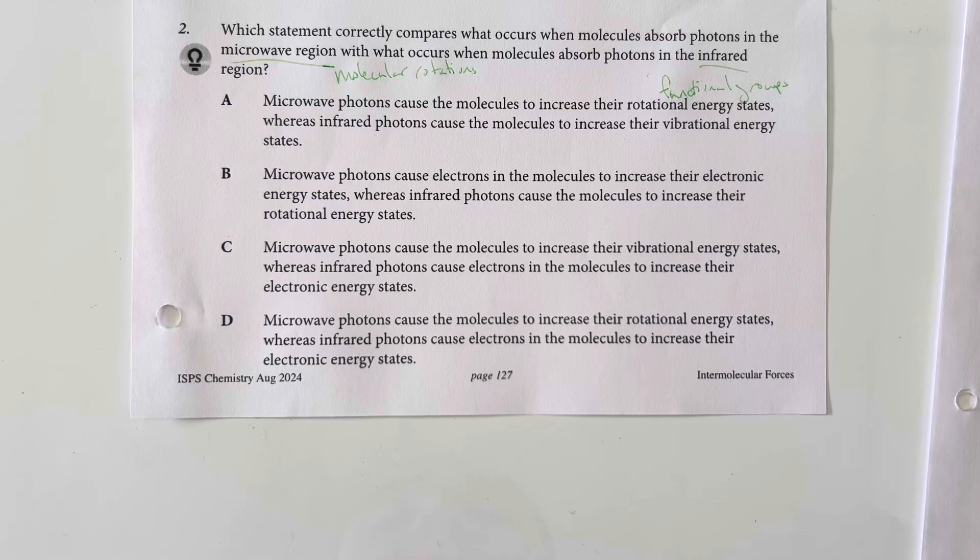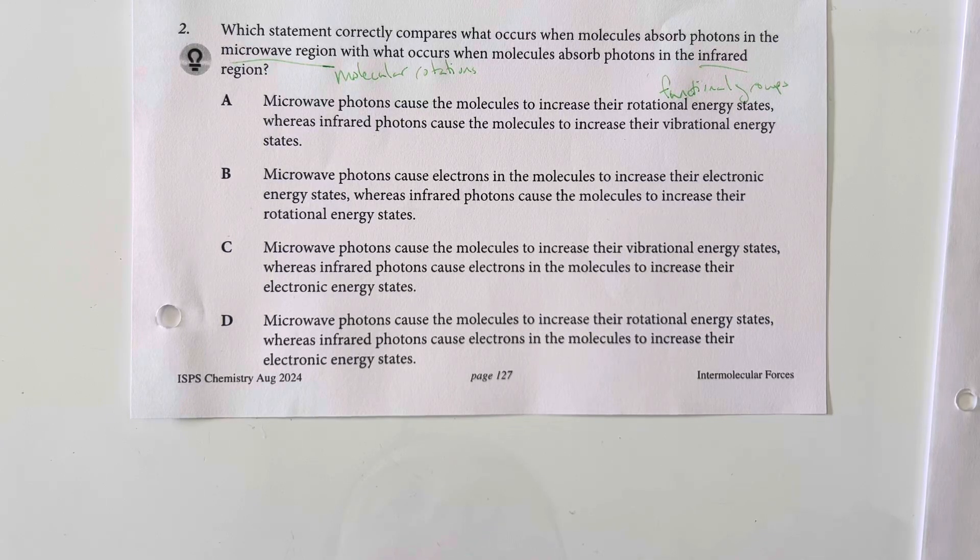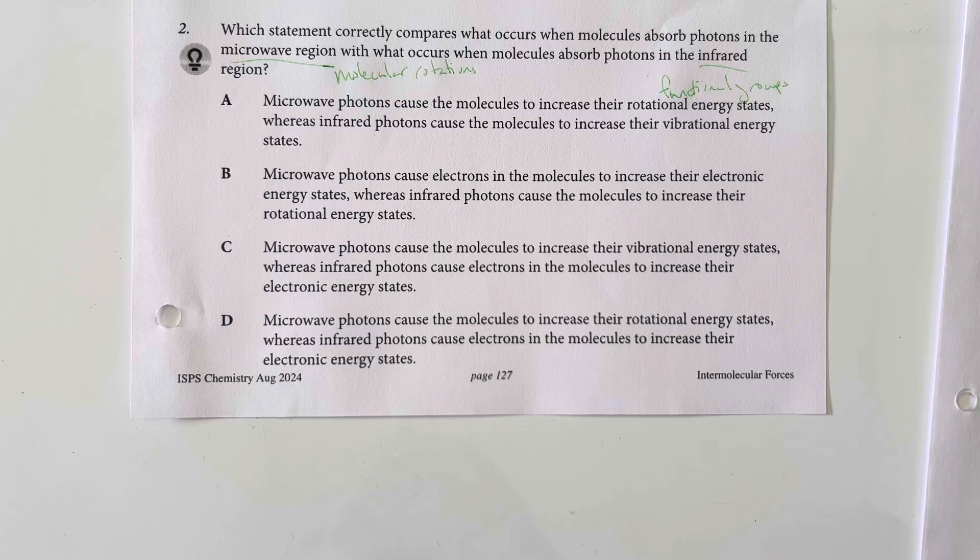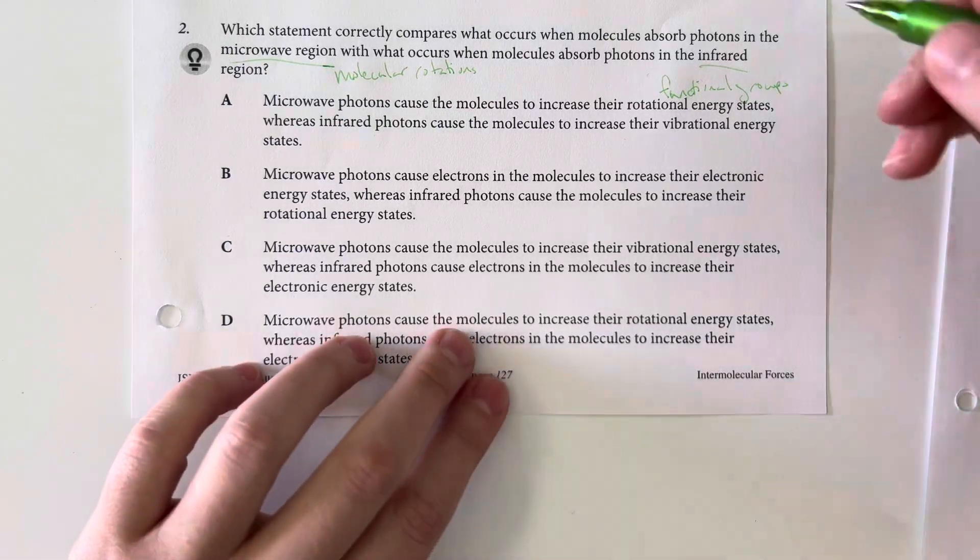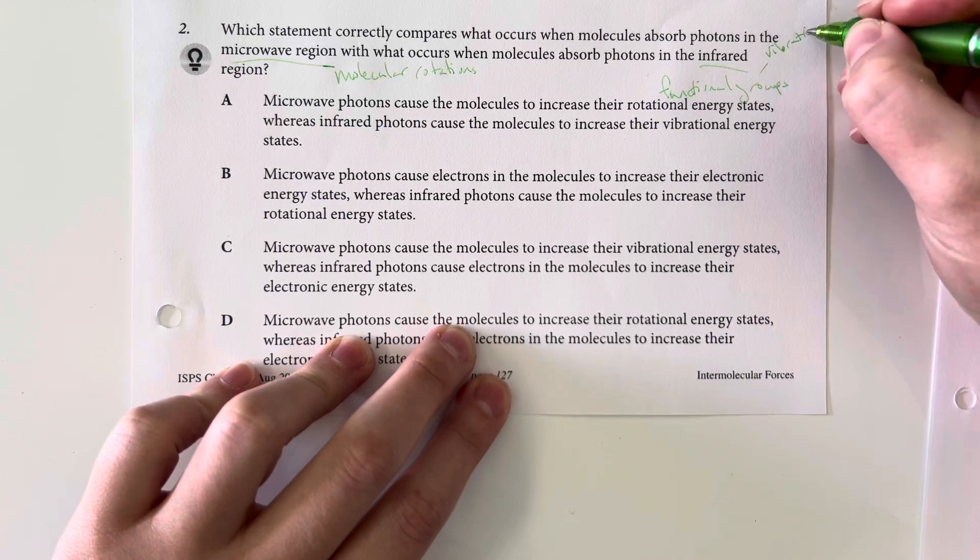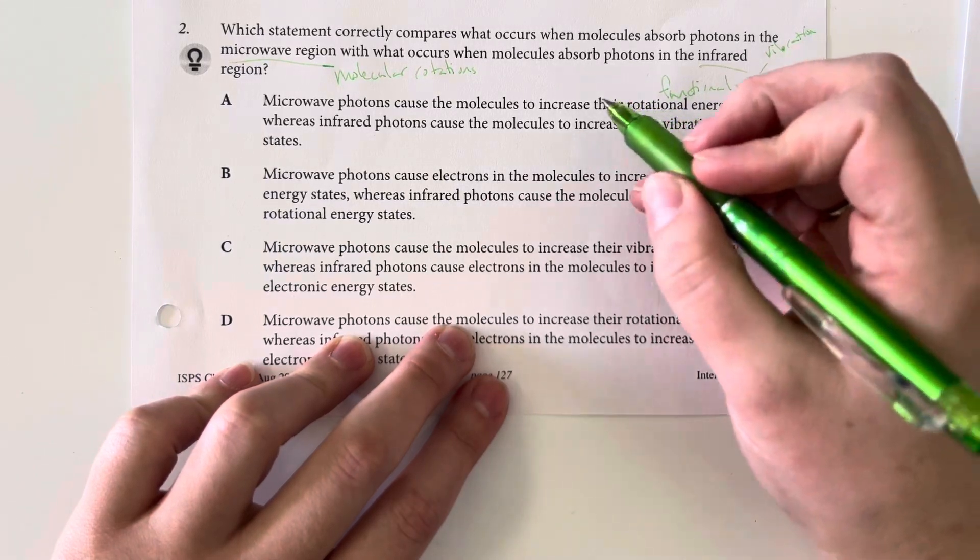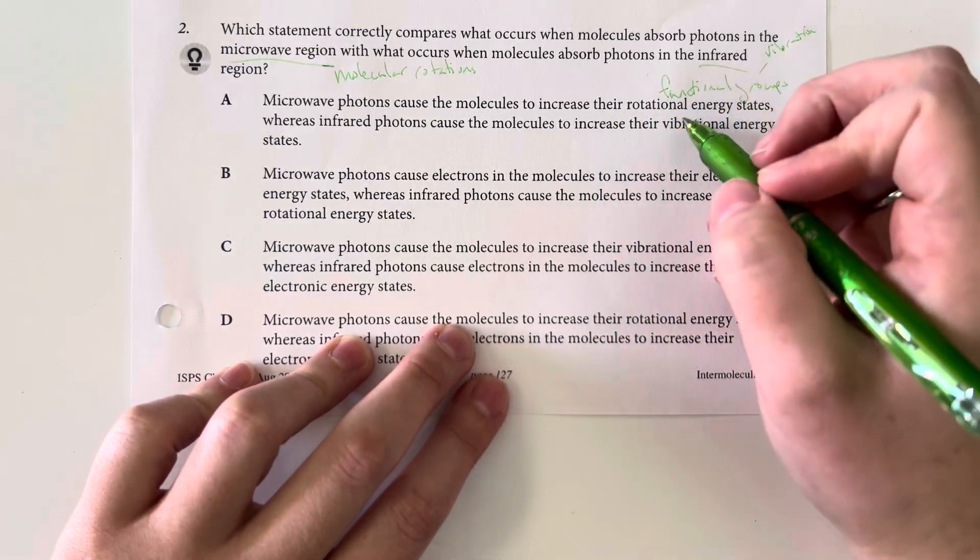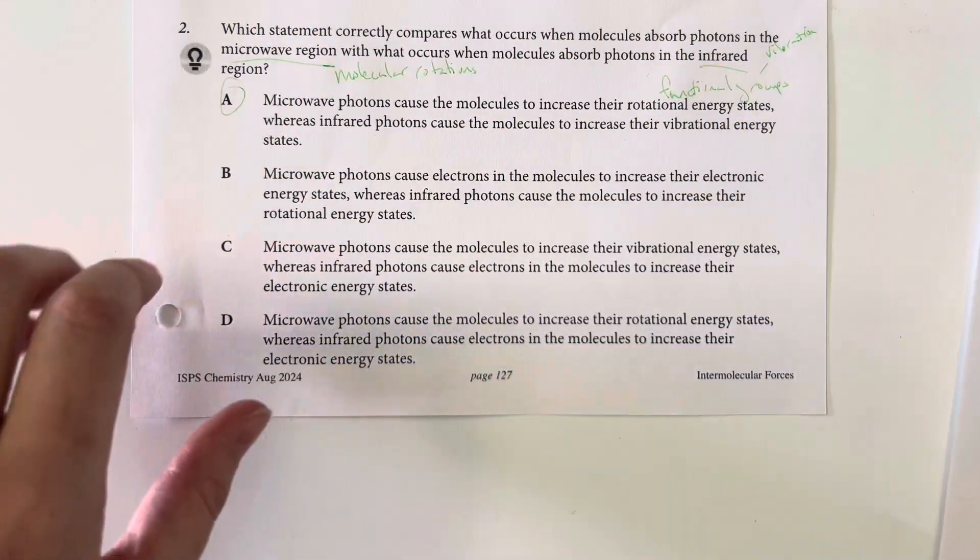Option choice A says that microwave photons cause the molecules to increase their rotational energy states, whereas infrared photons cause the molecules to increase their vibrational energy state. And that is going to be true with the identification of functional groups. We are specifically increasing their vibration and measuring that. Since we have identified that the microwaves are increasing rotational and the infrared is increasing vibrational, that is going to be our correct choice.